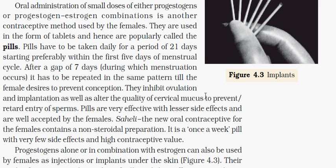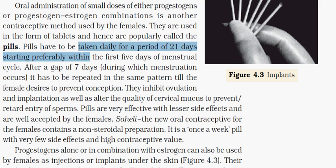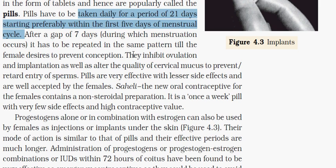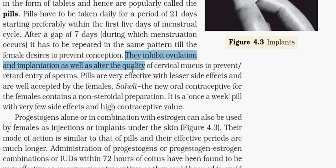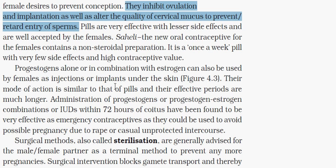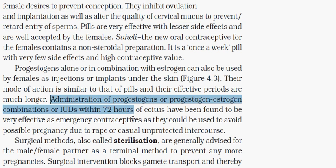Pills contain small doses of progesterone, or a combination of progesterone and estrogen. Daily pills are taken for 21 days, starting preferably within the first five days of the menstrual cycle. They inhibit ovulation and implantation, and alter the quality of cervical mucus to prevent or retard entry of sperms. Saheli is one example. Emergency contraceptive pills must be administered within 72 hours of coitus.